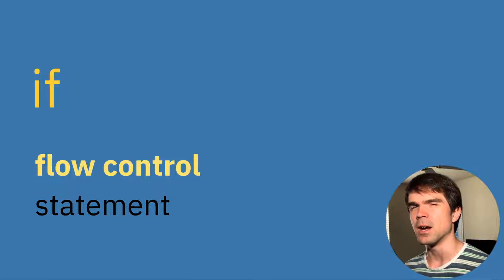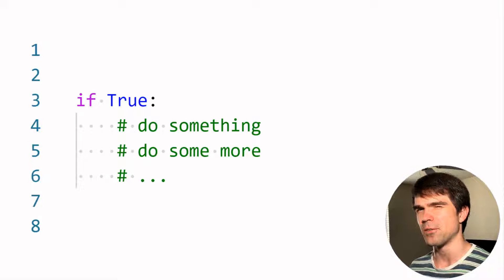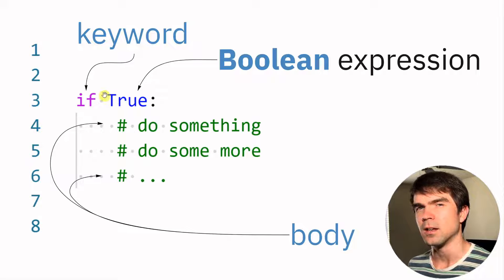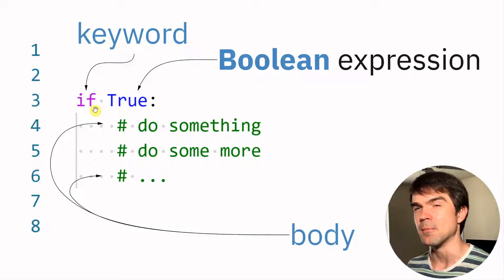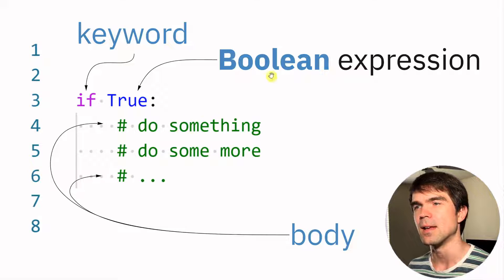Before we dive into Blender, I want to show you a number of slides just to get on the same page. Here's an example of how an if statement looks — it has a number of main parts. The first thing to notice is the if statement keyword, which tells Python that what's coming next is an if statement. Then we have a boolean expression, and then the body of the if statement — the code that's going to be executed if the boolean expression is true.